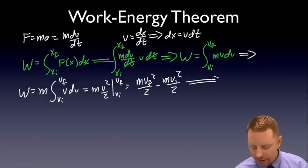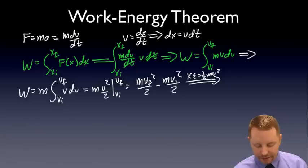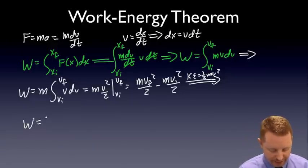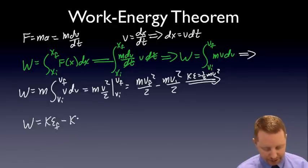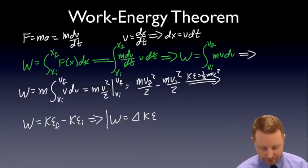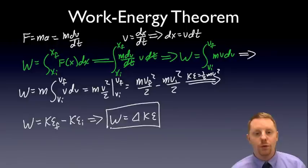Now, if you recall, kinetic energy is one half m v squared. So this is really the final kinetic energy. That's the initial kinetic energy. Therefore, the work done is the final kinetic energy minus the initial kinetic energy, or final minus initial implies that work is equal to the change in kinetic energy.